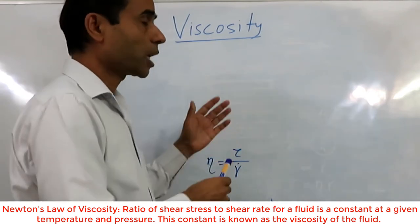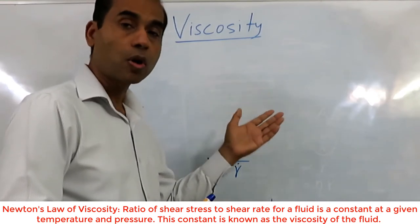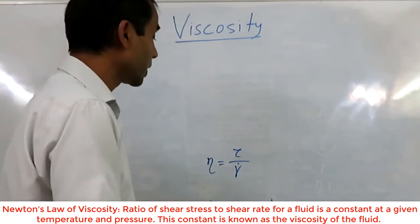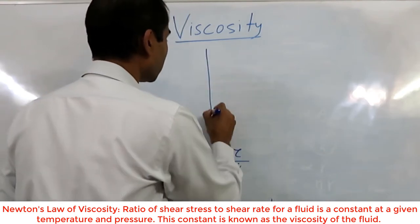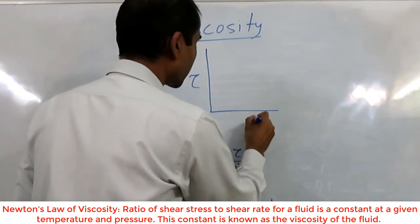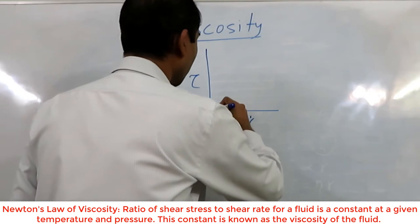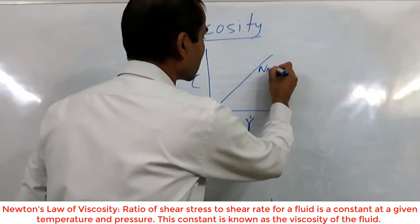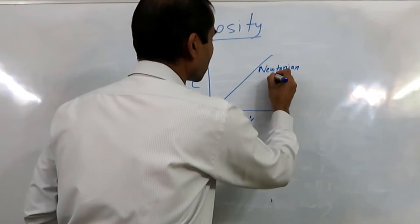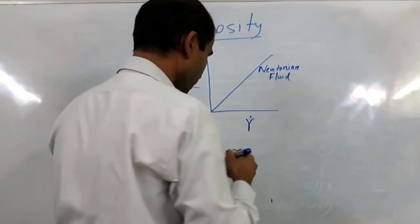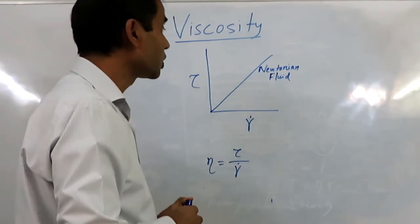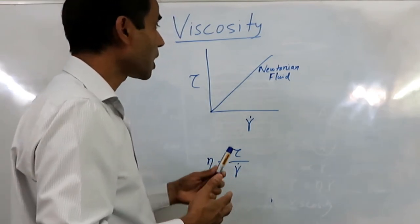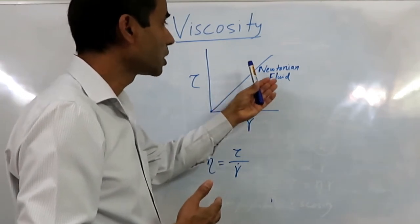Viscosity can be found for simple fluids like water. Water is a Newtonian fluid, so this relation is also known as Newtonian viscosity. For Newtonian fluids, if we plot shear stress as a function of shear rate, it gives a straight line starting from zero. Any other kind of behavior is known as non-Newtonian. Many liquids we deal with in lubrication are non-Newtonian, though some are Newtonian as well.